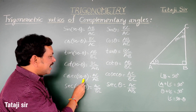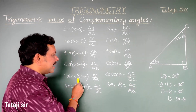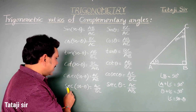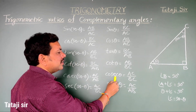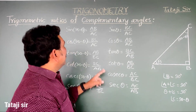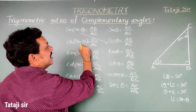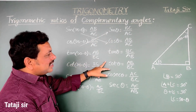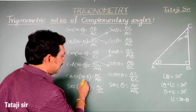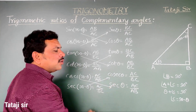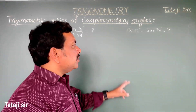Cosecant 90 minus theta equals AC by AB, which is secant theta. Secant 90 minus theta equals AC by BC, which is cosecant theta. So to summarize the trigonometric ratios of complementary angles: sin(90−θ)=cosθ, cos(90−θ)=sinθ, tan(90−θ)=cotθ, cot(90−θ)=tanθ, cosec(90−θ)=secθ, sec(90−θ)=cosecθ. Now let's do some examples on complementary angles.